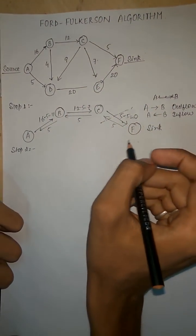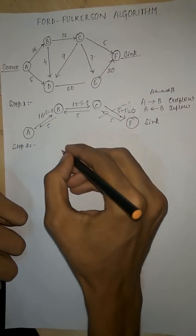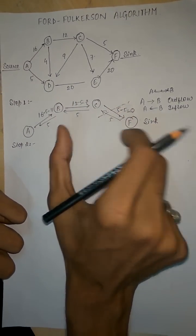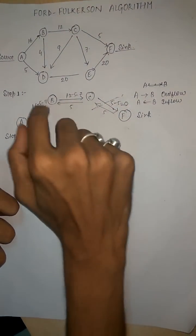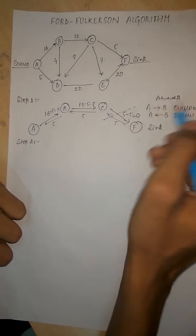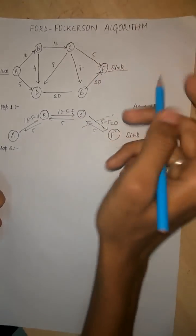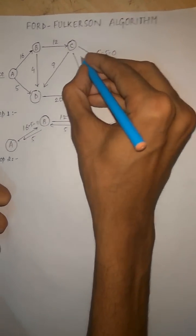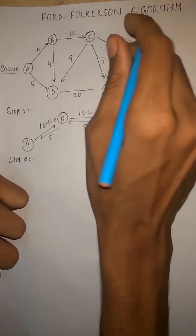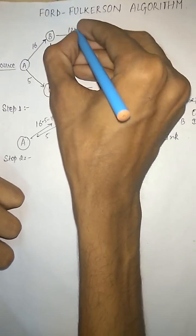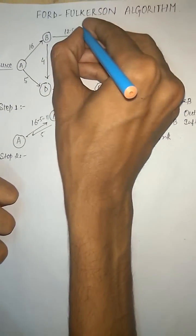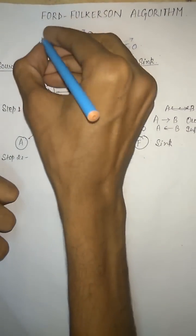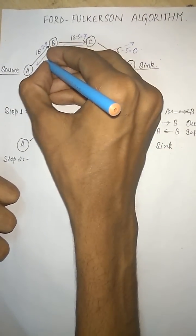Here I have drawn just A, B, C, and F. You can also draw D and E, but in this step the other two vertices are not required. Now since we have done step one, we go back to the main graph and mark what has been done. C to F has become 0, so the vertex CF is no longer to be used. BC becomes 7 outflow, 5 inflow. AB becomes 11 outflow and 5 inflow.